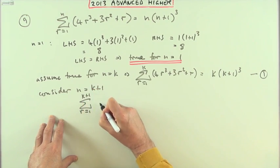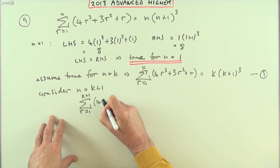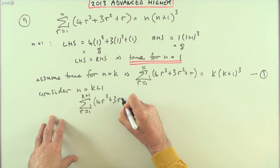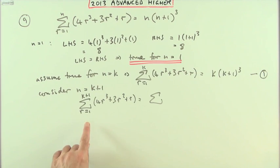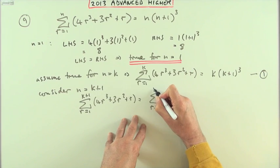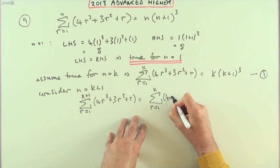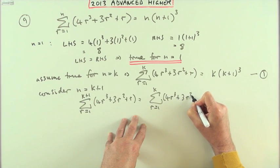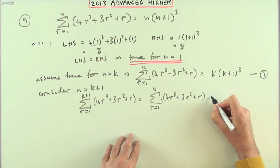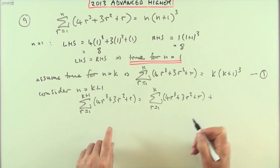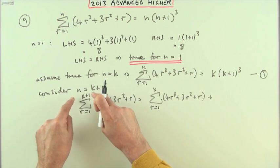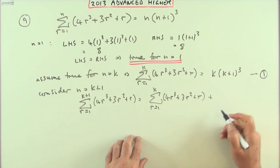Well, what happens when n is k plus 1? I'll have sigma r equals 1 to k plus 1 of 4r cubed. It's a bit tedious. This will be the sum of all the terms up to k plus 1, which will be the sum of all the terms up to k plus the next term.